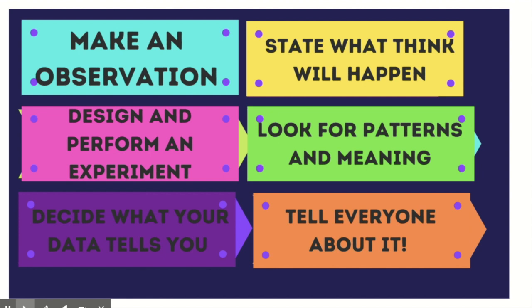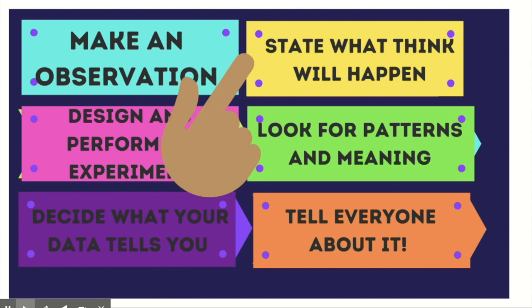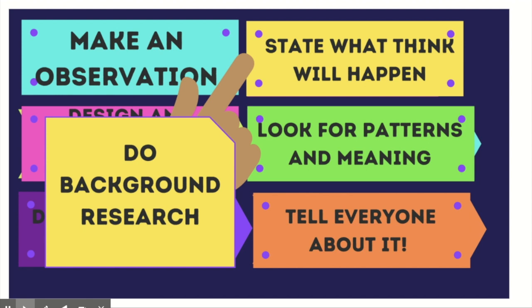There's another step that sometimes gets left out of the scientific method or rolled into the hypothesis or observation section — background research. A good scientist, before starting an experiment, will try to find out about the topic they plan to investigate. They'll see if there have been other studies on that topic and gather any information that will help them design an effective experiment.